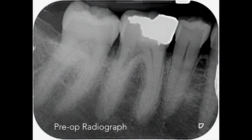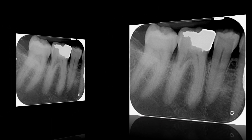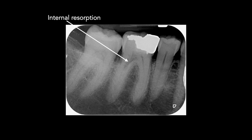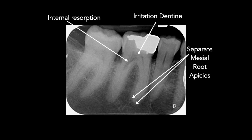Here you can see the pre-operative radiograph of the mandibular right first molar. The tooth was still vital but was symptomatic. It's been restored with an amalgam restoration. The pre-operative radiograph shows an area of internal resorption on the distal root. You can tell this is internal resorption firstly because the tooth is still vital, but there's no ghost area of root canal superimposed on the area of resorption. The canal shape has been distorted. There's irritation dentine in the pulp chamber and two separate canals in the mesial aspect.